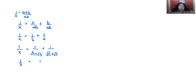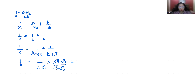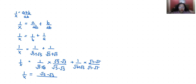To rationalize 1/(√3 + √5), I multiply by (√5 − √3)/(√5 − √3). Similarly for 1/(√5 + √7), I multiply by (√7 − √5)/(√7 − √5). So 1/X equals (√5 − √3)/((√5)² − (√3)²) + (√7 − √5)/((√7)² − (√5)²), using the identity (a+b)(a−b) = a² − b².